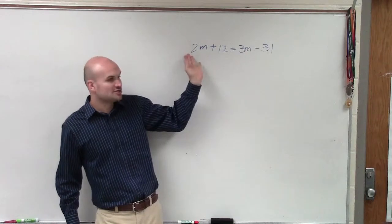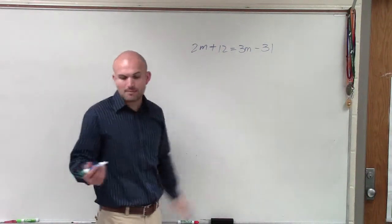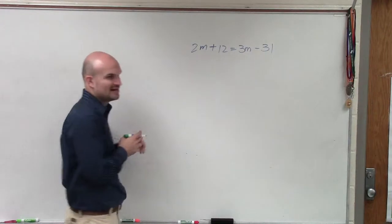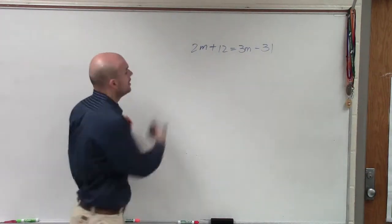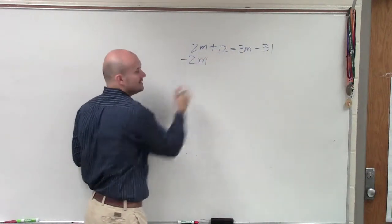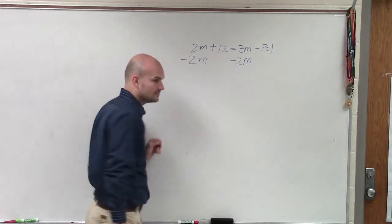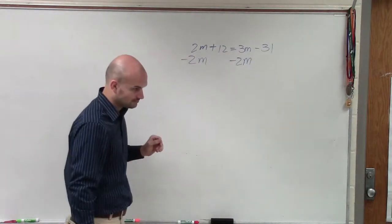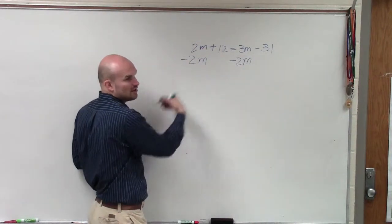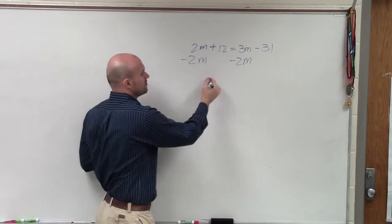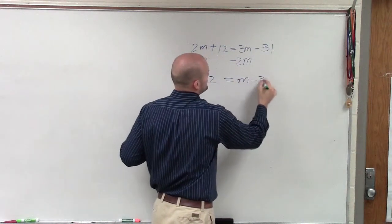So I have 3m and 2m. Since 2m is smaller than 3m, I'm going to eliminate that. How do you eliminate 2m? If I have positive 2m, I can subtract 2m. But I need to make sure whatever I subtract on the left side, I subtract on the right side. So I'll subtract on both sides. 2m minus 2m is going to be 0m. 0m plus 12 is just going to be 12, equals m minus 31.